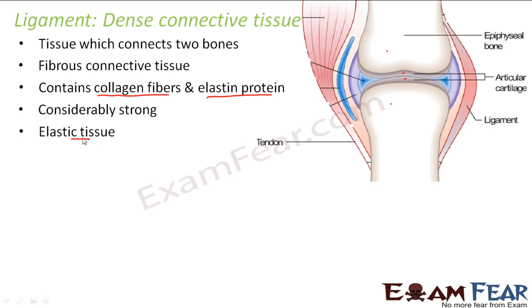Ligament has very little extracellular matrix and more fibers — that is why it is called dense connective tissue. The quantity of extracellular matrix, fibers, and ground substance changes with different kinds of tissues, which changes the structure and properties of the connective tissue. In ligament, they have very little extracellular matrix and more fibers. Since it has both collagen fibers and elastin protein, these two together give it flexibility and elasticity — even though it is dense.